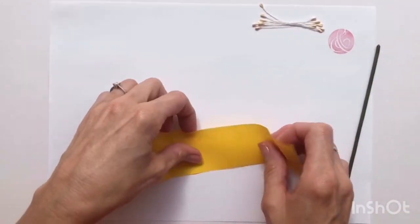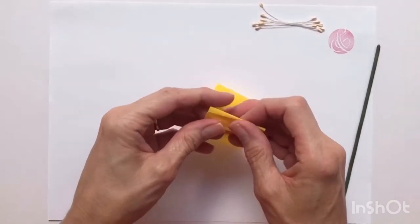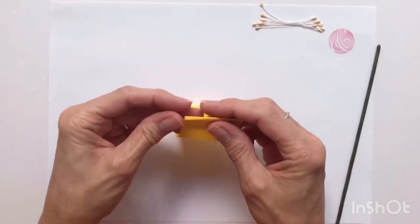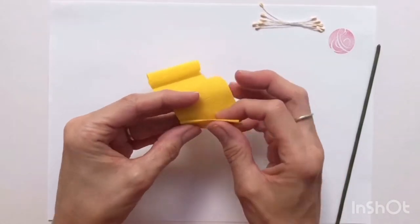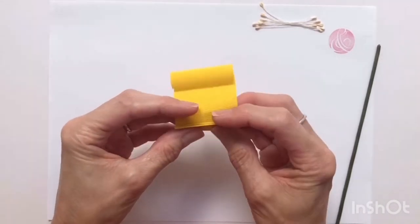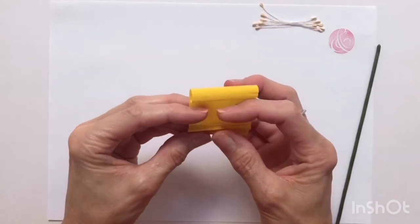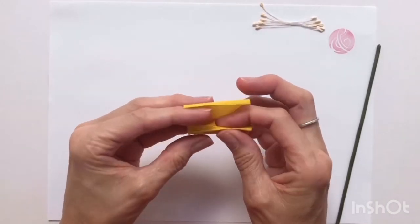What we're going to do now is concertina fold the paper all the way along, about a centimeter folds. It's a slightly lighter weight paper than we'd use for the petals. It's just a little bit easier to work with when you're making these little twists in the middle.